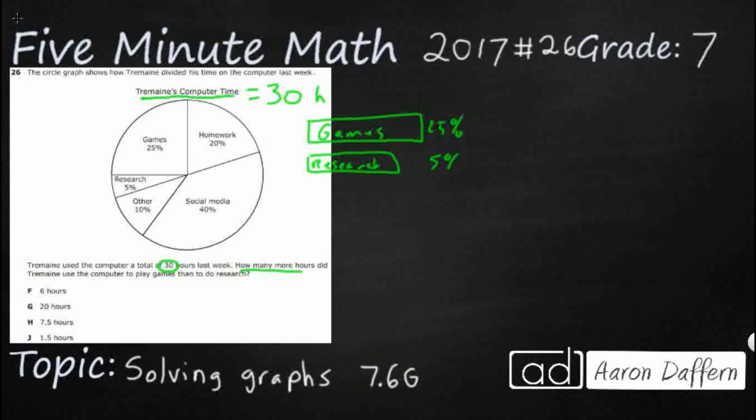Alright, so we've got two different ways to do this. Let me show you the long way then I'll show you the shortcut. So 25% of games, it's of 30 because there's 30 hours. So I need 25% of 30 and I need 5% of 30. Once I get those two I can just subtract the two.